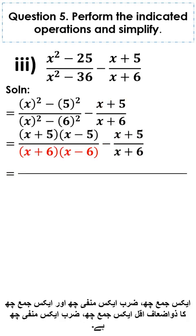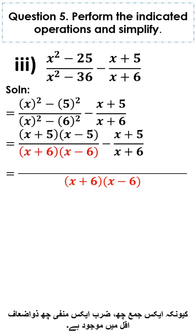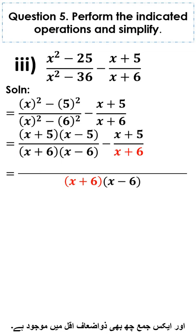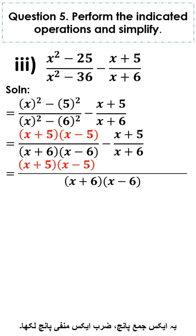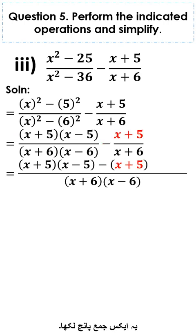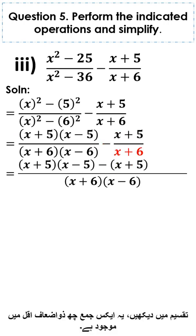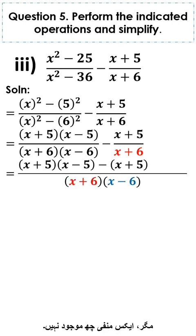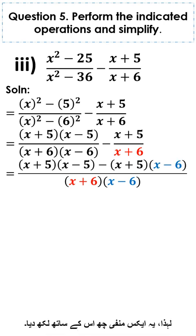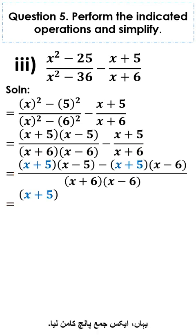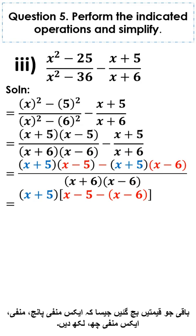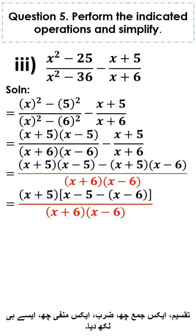The LCM of x plus 6 into x minus 6 and x plus 6 is x plus 6 into x minus 6. x plus 5 into x minus 5 is written for the first fraction. Minus x plus 5 is written for the second fraction; since x plus 6 is present in LCM but x minus 6 is not, x minus 6 is written with it. Divided by x plus 6 into x minus 6.